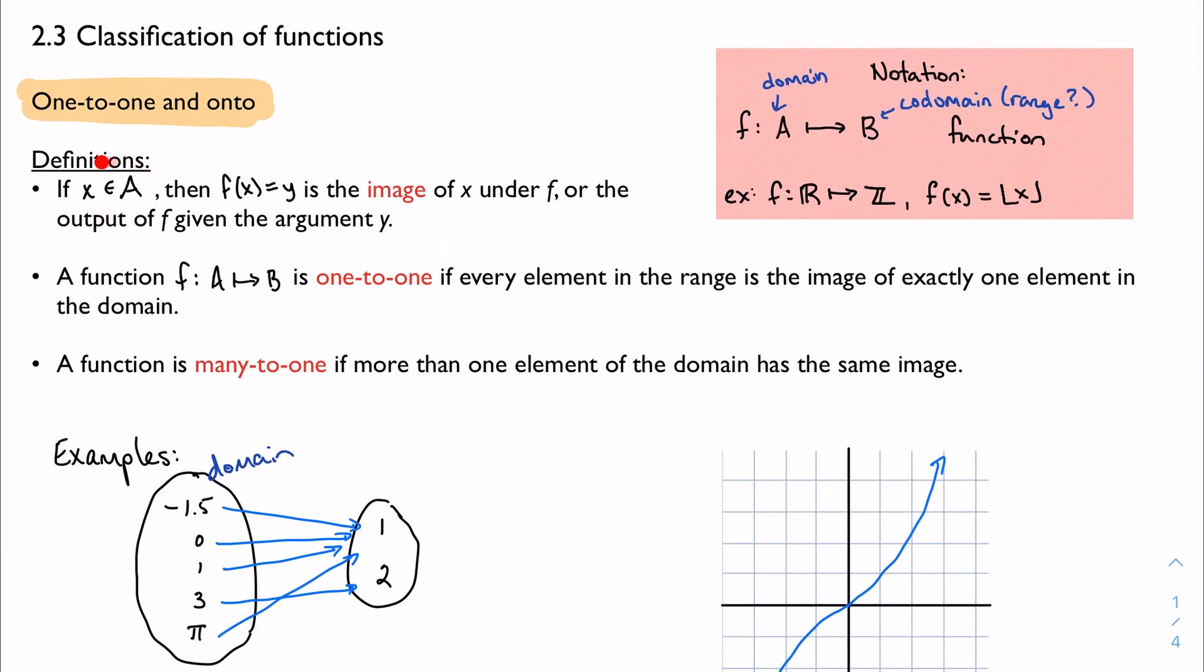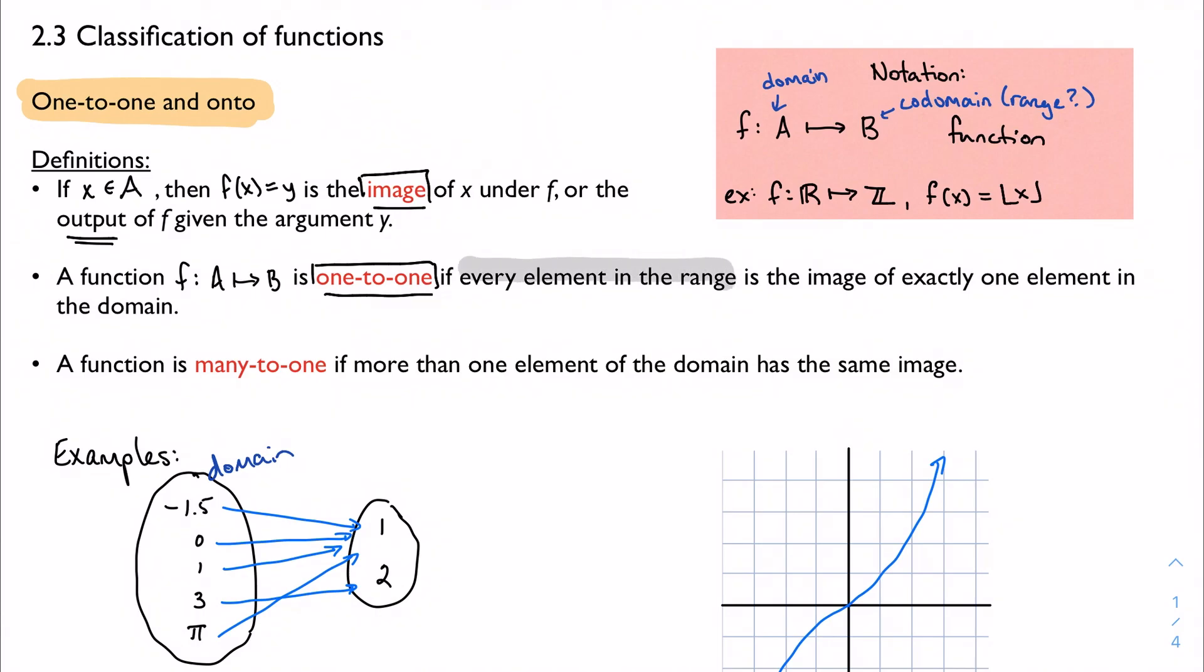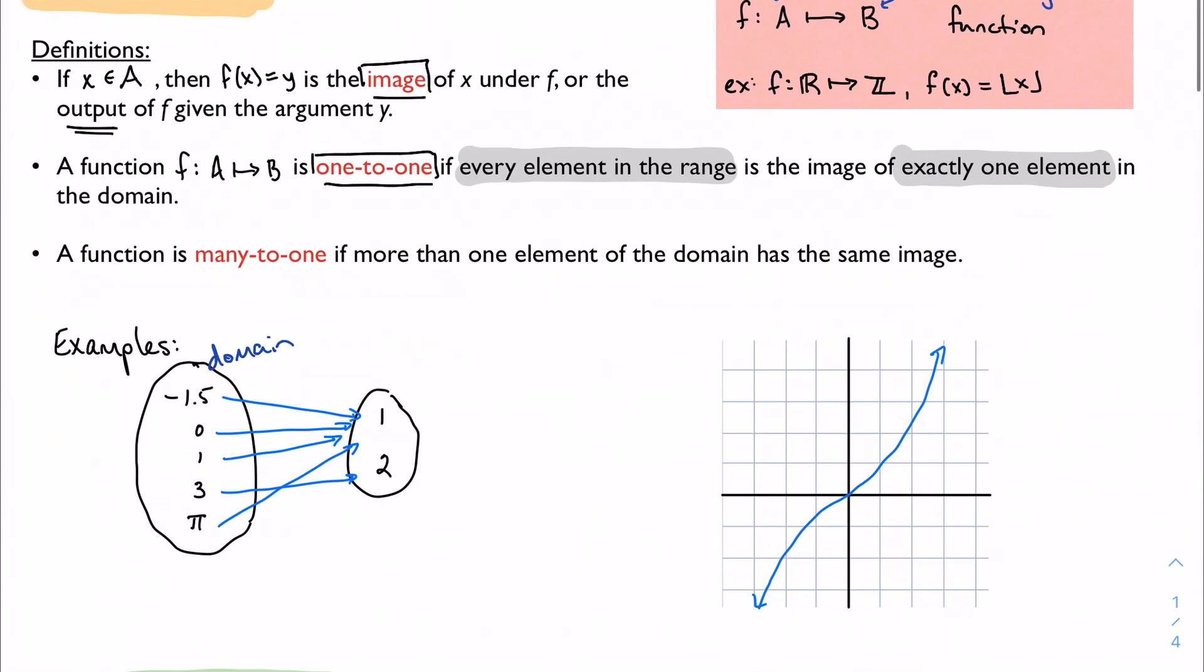Based on that definition and some other definitions here, let's jump in. If I have x as an element in my domain, then the function evaluated at that value gives me some output. That's what we would normally call our y values, but we're also going to call it an image of x under f, or the output. Based on an image, if I have a function, I can call it one-to-one if every element in the range is the image of exactly one element in the domain.